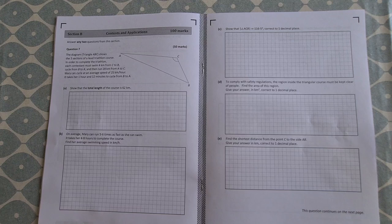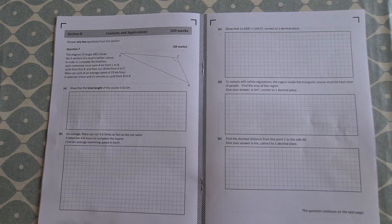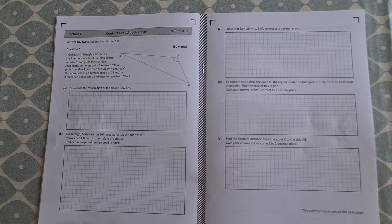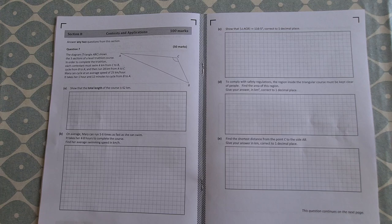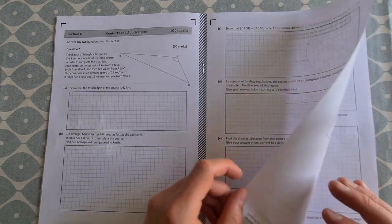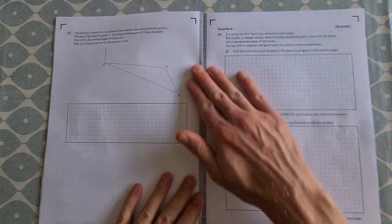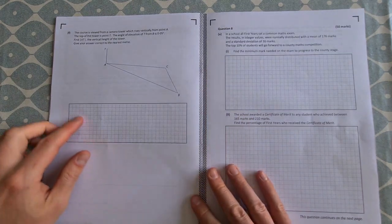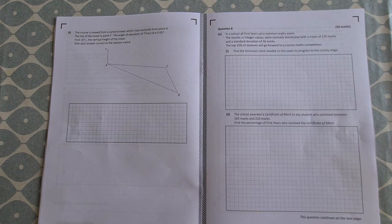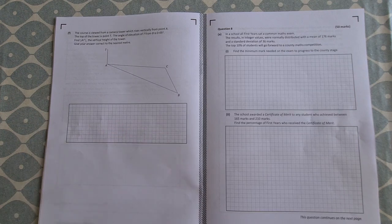We started off with a nice trigonometry question here. A triathlon course, triangle ABC, you have a bit of distance, speed, time in it, and finding different distances and different angles. So that's a nice enough question for the people who like their trigonometry. And then there's just a tower here, so a little bit of bringing 3D into the same question, but not too bad. That's a short little bit at the end.